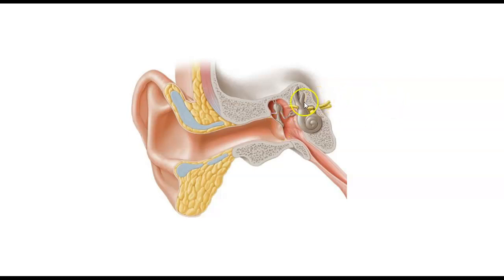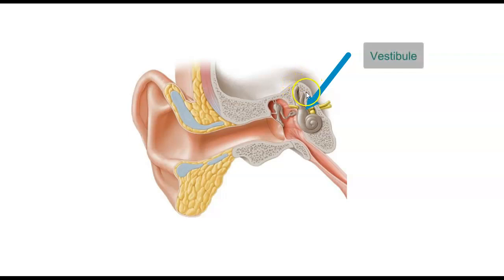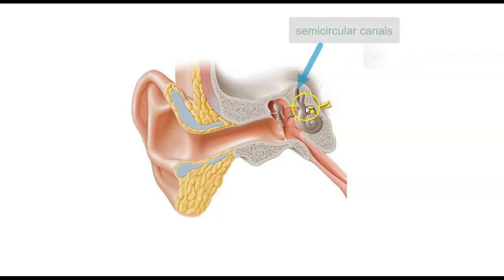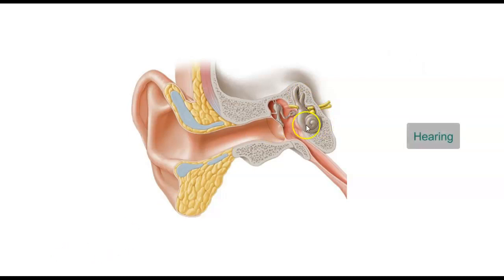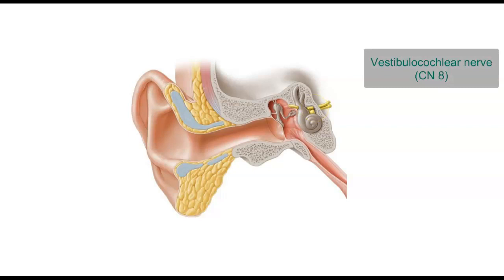The inner ear consists of a snail-looking structure called the cochlea, the vestibular apparatus, and three semicircular canals. The vestibular portion combined with the semicircular canals is very important for balance, and the cochlea is the primary structure important for hearing. There are two nerves: one going to the vestibular apparatus and one going to the cochlea. This is called the vestibulocochlear nerve, cranial nerve number eight.